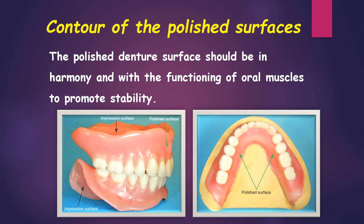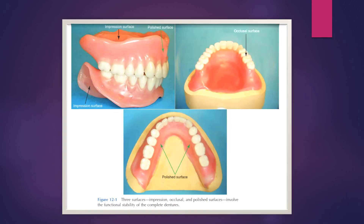Coming to the last point — contour of the polished surface. The polished denture surface should be in harmony with the functioning of the oral muscles to promote stability. There are three surfaces: the impression surface, polished surface, and occlusal surface, all of which influence the functional stability of the complete dentures.